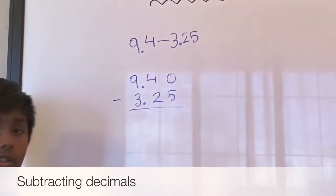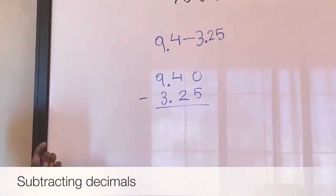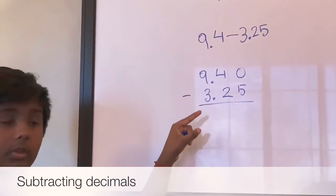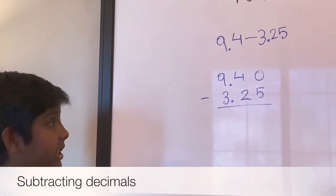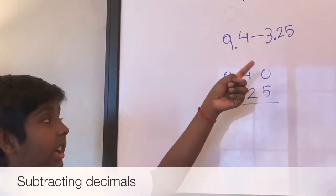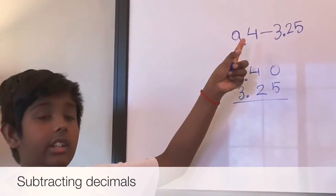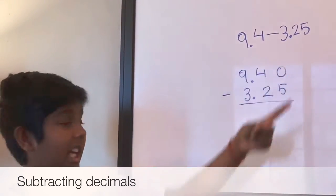You know how I put the 3.25 on the bottom? I put the 3.25 on the bottom because that's the takeaway number after the takeaway sign. That's why I put it on the bottom.